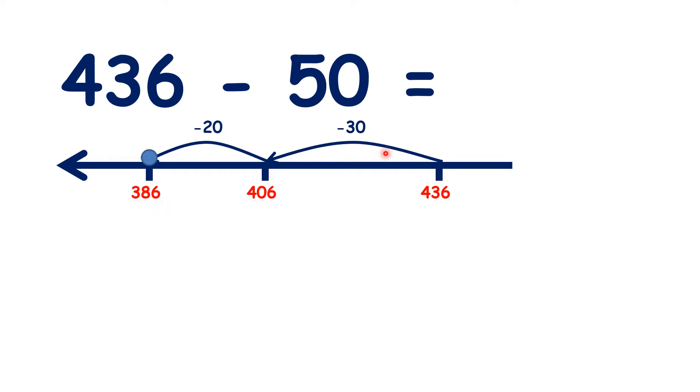So we have subtracted 50 because we subtracted 30, then subtracted 20, and that helped us find our answer, 386. So we started with 4 hundreds and 3 tens, which we can think of as being 43 tens. We subtracted 5 tens, and then in our answer, we ended up with 3 hundreds and 8 tens, which we can think of as being 38 tens.